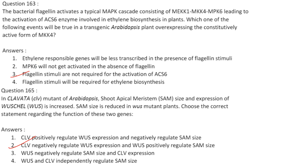Bacterial flagellin activates a MAPK cascade consisting of MEKK1, MKK4, MPK6, leading to activation of ACS6 enzyme involved in ethylene biosynthesis in plants. In transgenic Arabidopsis overexpressing the constitutively active form of MKK4, flagellin stimuli are not required for activation of ACS6, since MKK4 is constitutively active. Answer is option 3.